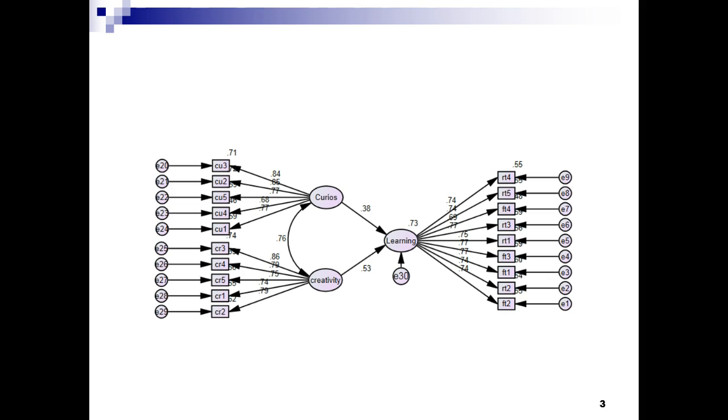As a final bit of review, there are two different theories we are testing when we make causal claims. The first is called a measurement theory and is assessed using a measurement model. This is what I am going to explain in this video. The second theory is a causal theory and is assessed using a structural model. The structural model includes causal claims in the form of hypotheses.